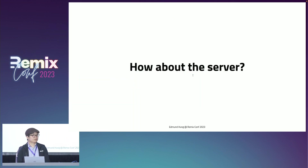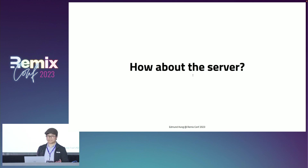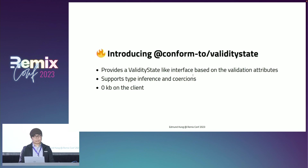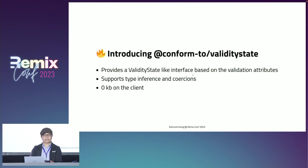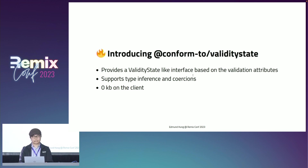It's great to have client validation in place, but it doesn't mean we should skip server validation. Let me introduce you to the Conform validityState helper. This is a package for you to perform server validation by providing a ValidityState-like interface based on validation attributes. It supports type inference and is tree-shaken on the client since it's only needed on the server.